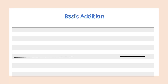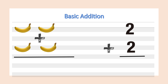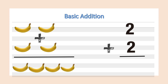Now let's look at another one. We have one, two — two bananas, plus one, two — another two bananas. Now count them together and find out how many there are. Let's count together: one, two, three, four. We have four bananas all together. So the sum of two and two is equal to four.